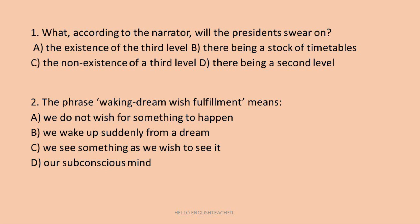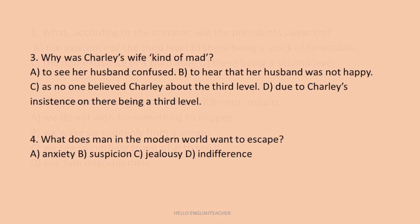Question 2: The phrase 'waking dream wish fulfillment' means: A) we do not wish for something to happen; B) we wake up suddenly from a dream; C) we see something as we wish to see it; D) our subconscious mind. The answer is C — we see something as we wish to see it. Question 3: Why was Charlie's wife kind of mad? The answer is B — to hear that her husband was not happy. Question 4: What does a man in the modern world want to escape? The answer is A, anxiety.